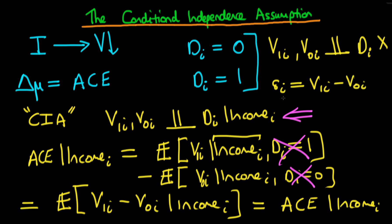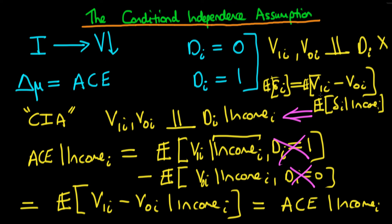It's easy to see that this is exactly what we set out to get — the average causal effect given a state's level of income — because the causal effect of infrastructure spending was defined as V1I minus V0I. We define the unconditional average causal effect as the expectation of delta I, which is the expectation of V1I minus V0I. Then conditional on the level of income, we define the average causal effect conditional on income I, which equals that same expression. The conditional independence assumption allows us to formulate econometric models that evaluate this conditional average causal effect — not the unconditional version, but the average causal effect holding a number of important determinants of violence constant.